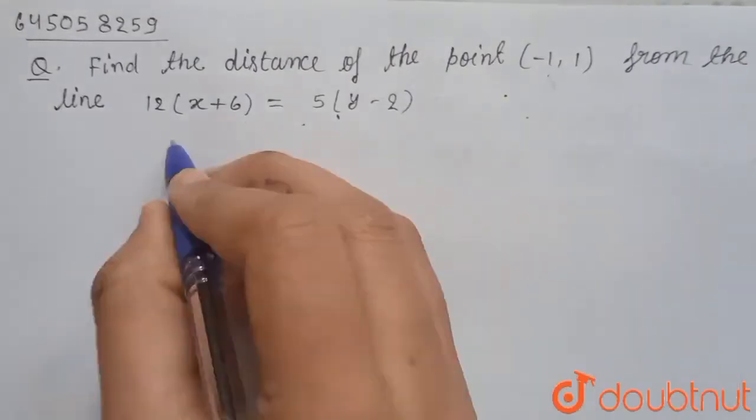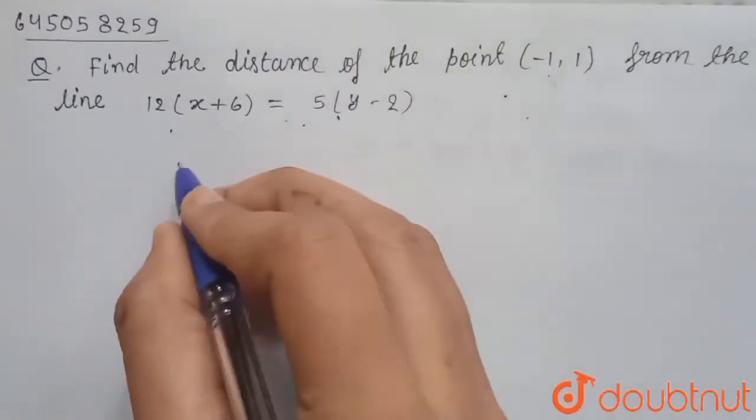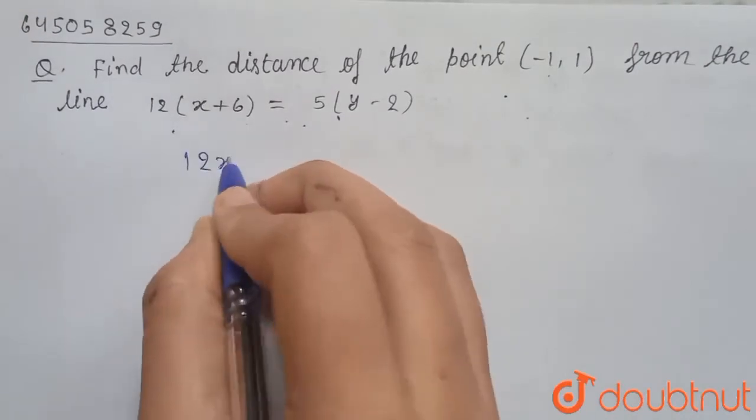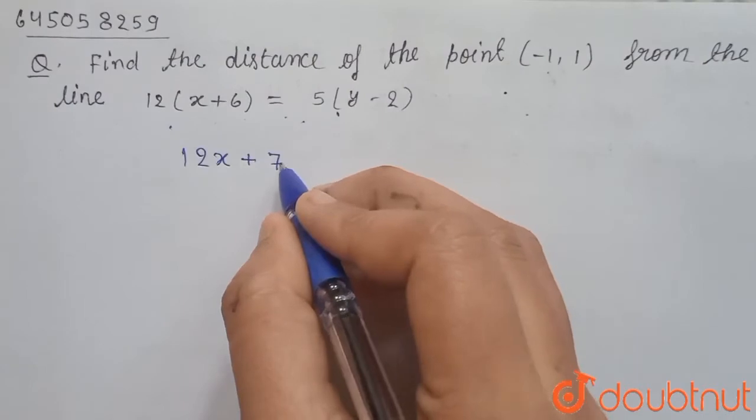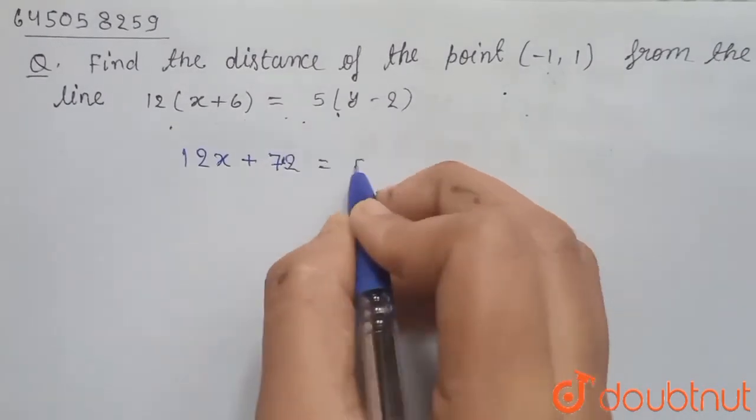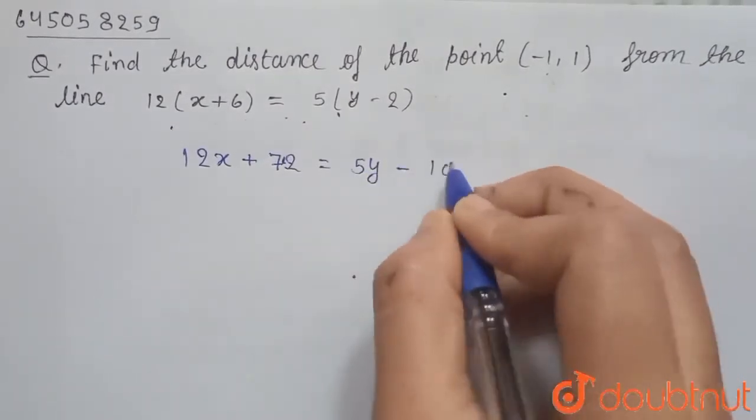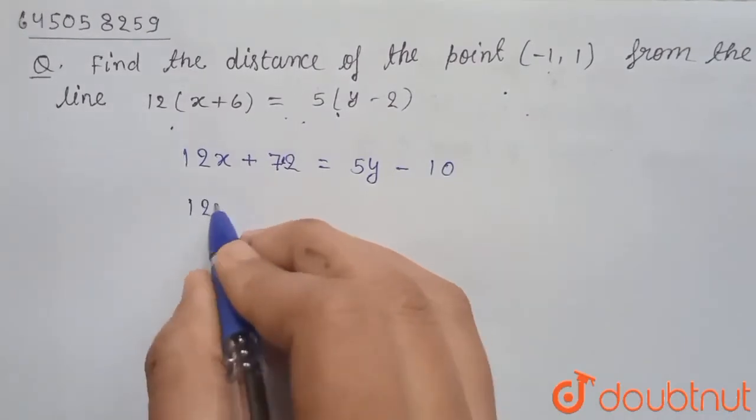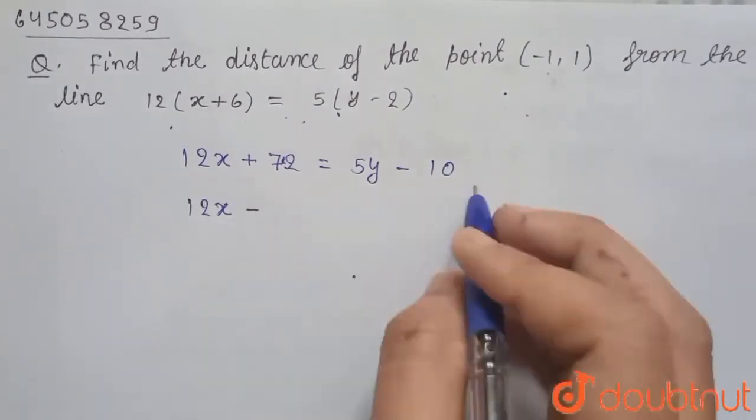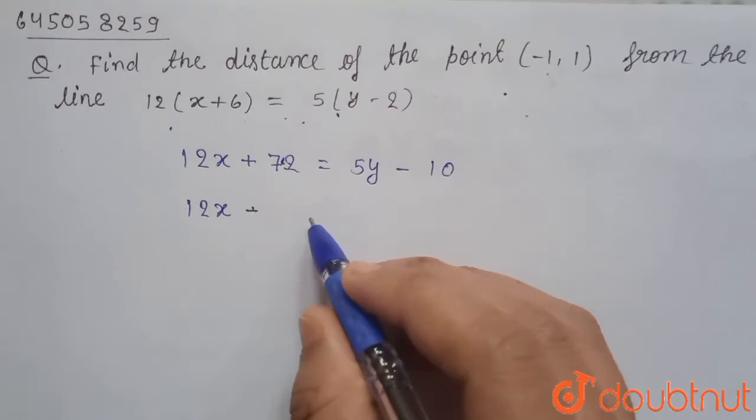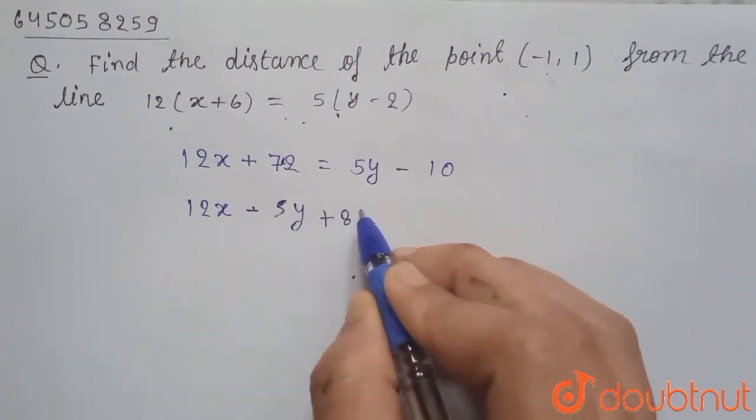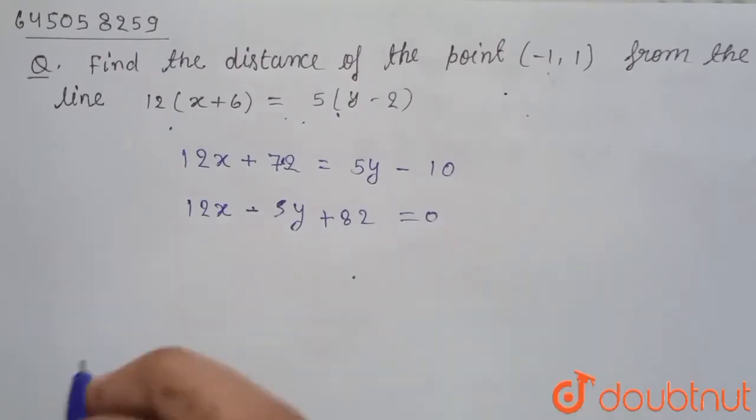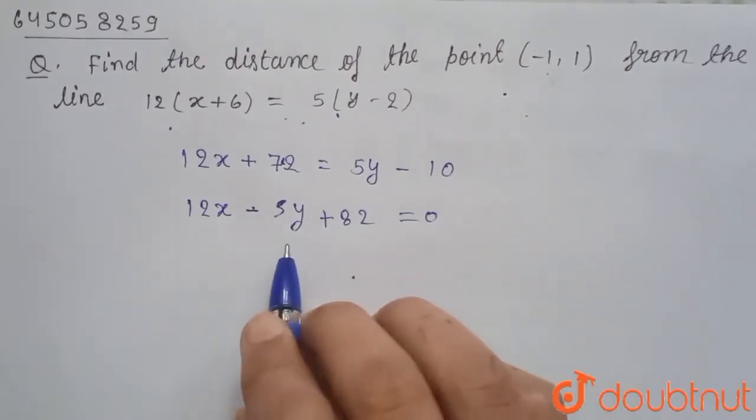First of all, let's simplify this line. So here we get 12x plus 72 equals to 5y minus 10, so here we get 12x minus 5y plus 82 equals to 0. Now this is our line and you have to find the distance from (-1, 1) to this line.